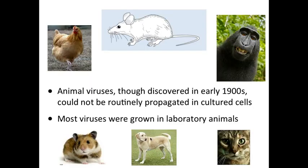Yesterday we discussed that viruses were discovered at the end of the 1800s and early 1900s. But for the first 40 or 50 years of virology research, these viruses could not be studied in cell cultures — they had to be propagated in animals. A whole host of animals were used for propagating viruses, some of which are shown here. Even today we still use animals to study viruses because we'd like to know how viruses cause disease, and to study disease you can only answer that question in an animal model. But cell culture has largely supplanted the use of animals for growing stocks of viruses and determining how much virus is present.